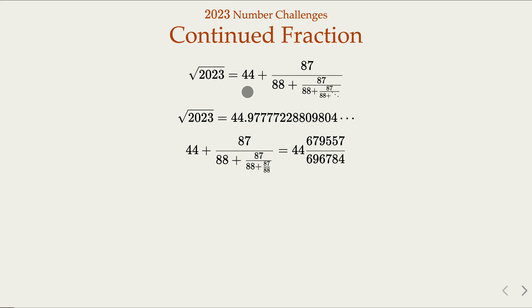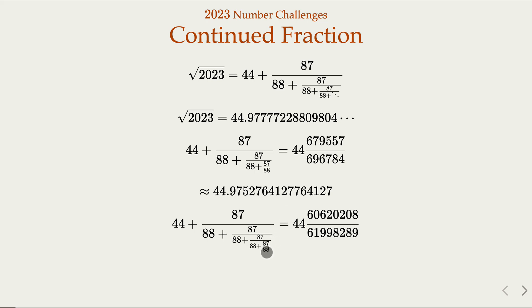So recall that's approximately 44.977. What if we use a finite number of terms? If we truncate, we get a big fraction. Using a calculator, this is about 44.97 — but the third digit is 7 here versus 5, so they differ. Maybe we should use more terms. With one more term, the number is bigger and getting closer. This time it's very close — the digits match well. As you go on, you get closer and closer to the true value. That's a good approximation.